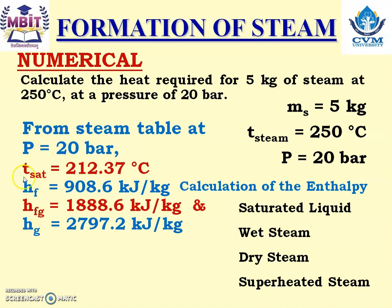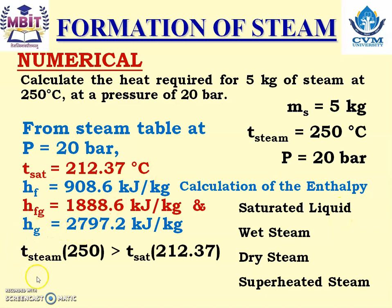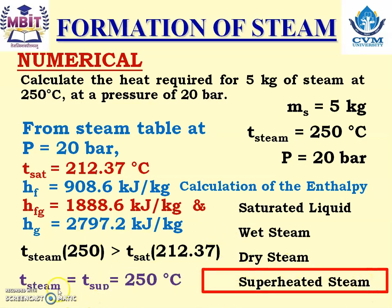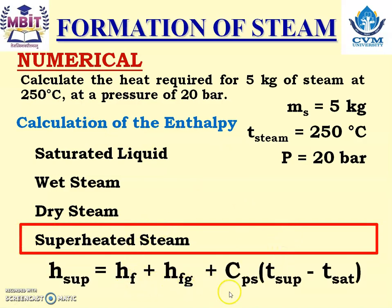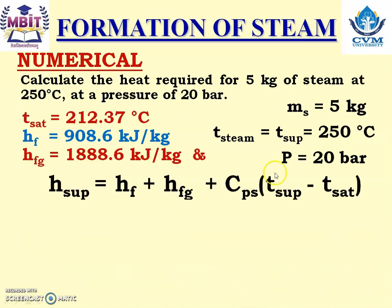From the steam table at P = 20 bar: T_sat = 212.37°C, and Hf, Hfg, Hg values are given. Now compare T_sat with the temperature given in the numerical: 250°C is more than 212.37°C. When temperature of steam is more than saturation temperature, it is always superheated steam. So T_sup = 250°C, and we must use the superheated steam equation.